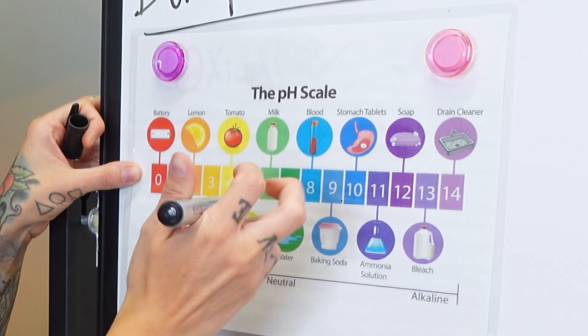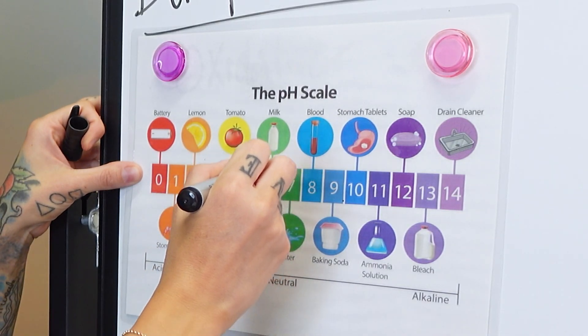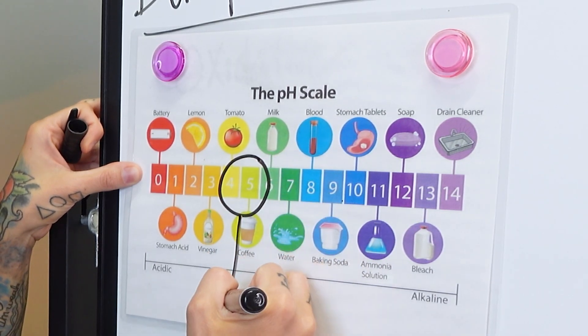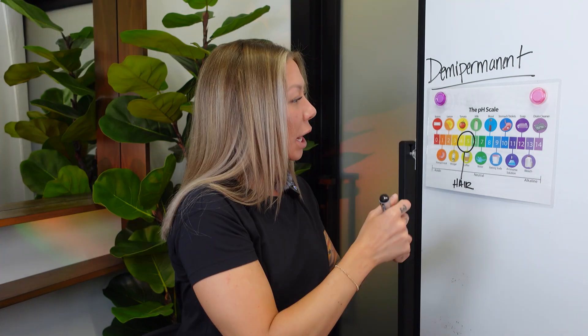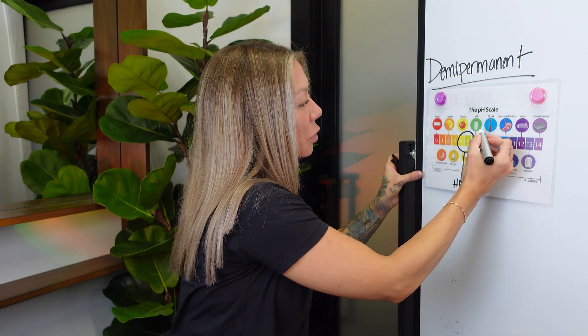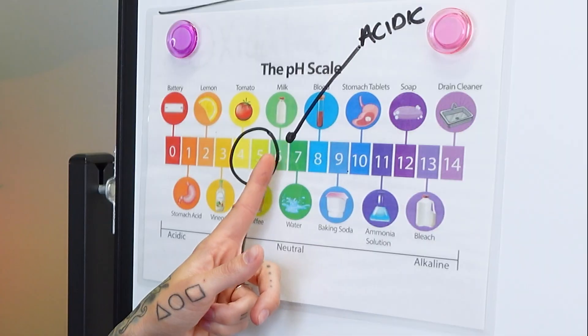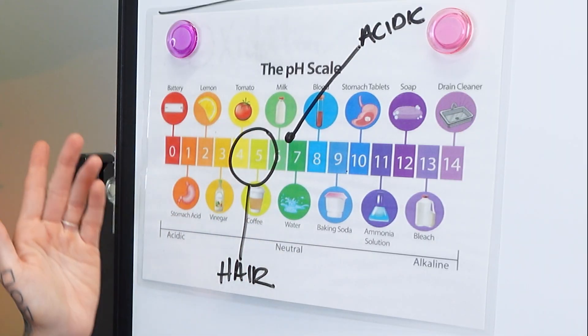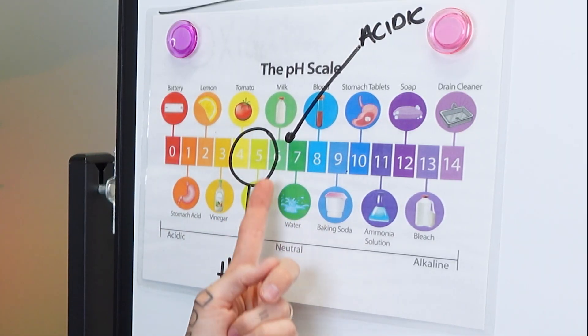Demi-permanent color gets a little tricky because it has two categories: acidic and alkaline. On the pH scale, hair is at 4.5 to 5.5. Acidic demi-permanents are no-lift — they're not going to lift natural hair color at all. They are deposit only. The pH range for those is 6.7, so it's on the acidic side — neutral being water in the middle.